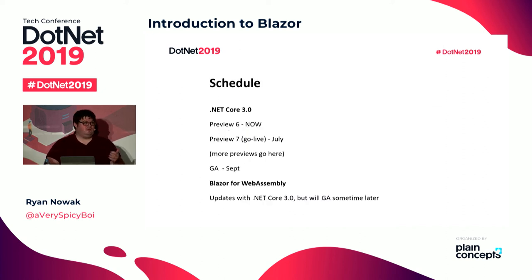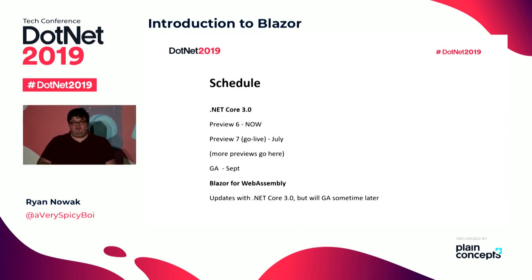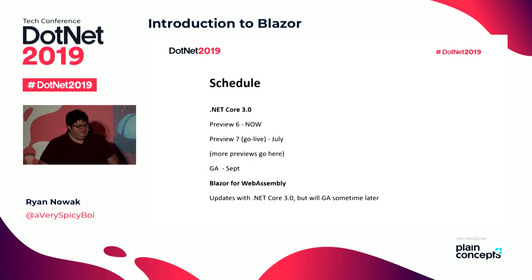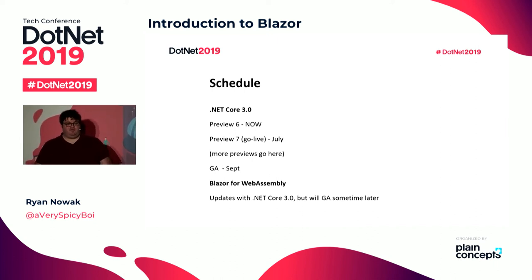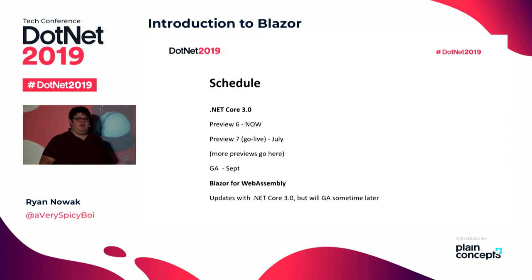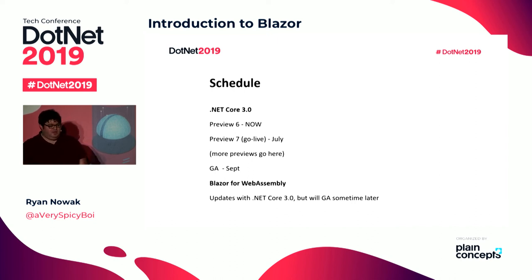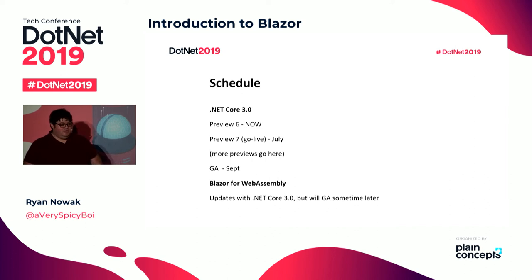Let's talk about the schedule. .NET Core 3 Preview 6 is out now. Preview 7 will be a Go Live release in July, with a couple more previews after that, and then GA of 3.0 in September. There will also be a .NET Core 3.1 in November as a polish and quality-of-life LTS release. Blazor for WebAssembly on the client side will continue to get updates after .NET Core 3 ships because it's one programming model, and GA for client-side Blazor will probably be around the .NET 5 timeframe when the runtime is more mature.